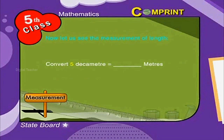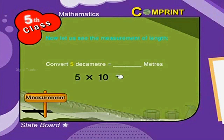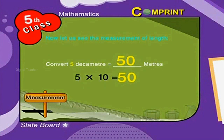For example, convert five decameters into meters. This can be written as: five into ten is equal to 50 meters.